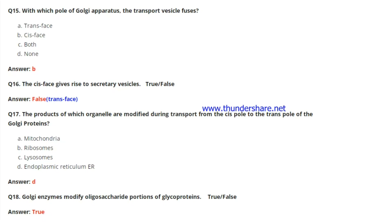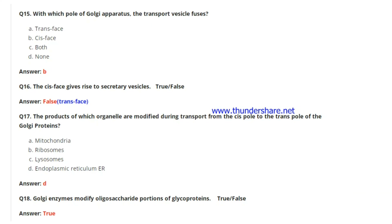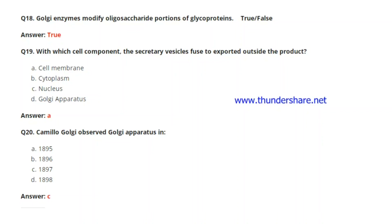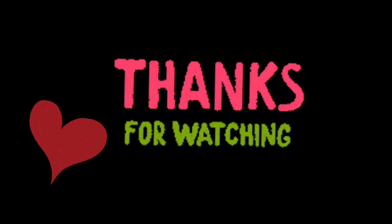Question 18: Golgi enzymes modify oligosaccharide portions of glycoproteins — true or false? Yes, this is true. Question 19: With which cell component do secretary vesicles fuse to export products outside? The answer is the cell membrane. Question 20: Camillo Golgi observed the Golgi apparatus in which year — 1895, 1896, 1897, or 1898? The answer is 1897.